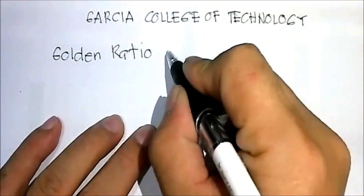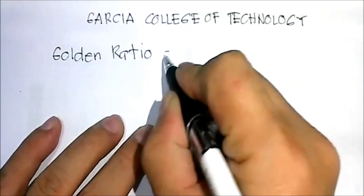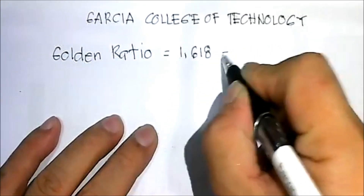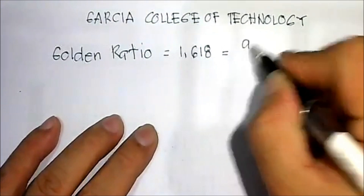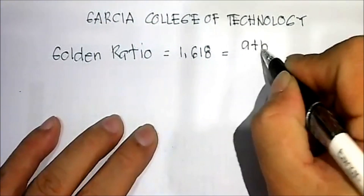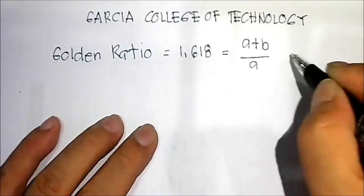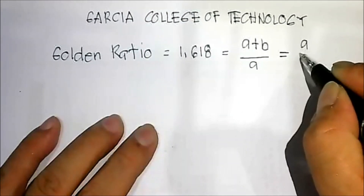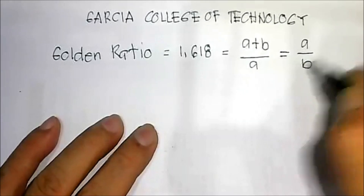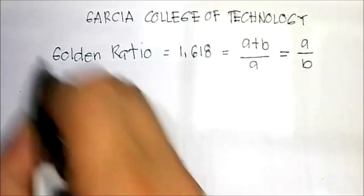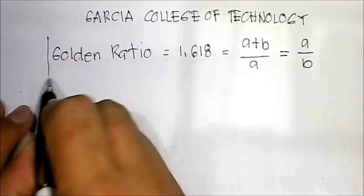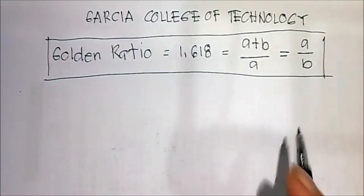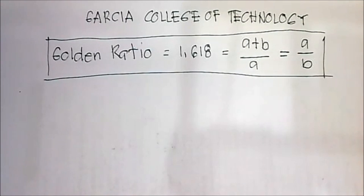The Golden Ratio in your module is equal to 1.618, which is also equal to (A plus B) over A, and that is also equal to A over B. Let's discuss which formula we should use in our discussion.